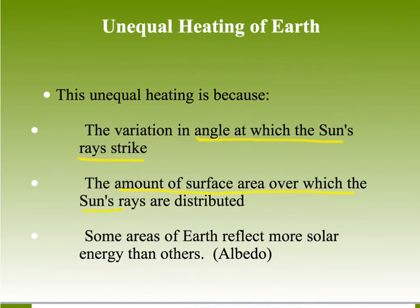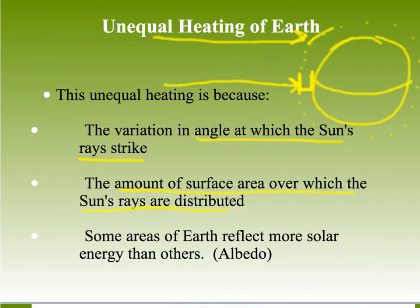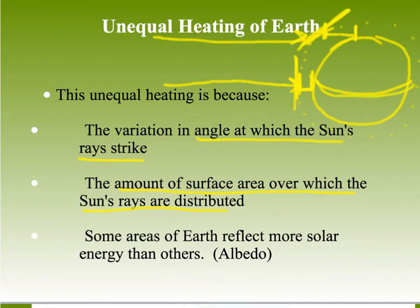The unequal heating is because of the angle at which the sun's rays strike the Earth and the amount of surface area over which those rays are distributed. The sun's rays come in directly at the equator with very little atmosphere to pass through, but at higher latitudes they travel a much greater distance through the atmosphere and lose more heat. This results in more heat at the equator than at higher latitudes.